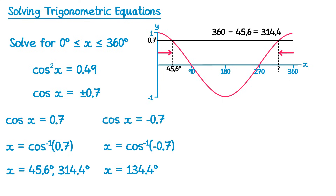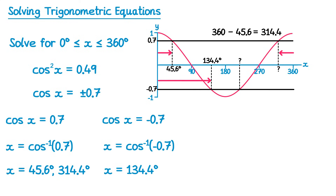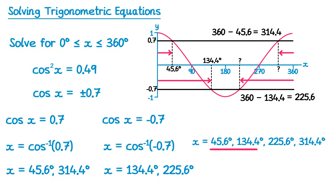For cos x equals negative 0.7, we draw that line on the graph — two solutions. We already have 134.4, and we need the other one on the right. Using symmetry: 360 take away 134.4 gives us 225.6. So for this equation there are actually four solutions between 0 and 360. Written in numerical order: 45.6, 134.4, 225.6, and 314.4 degrees.